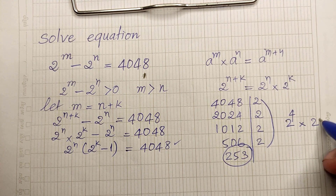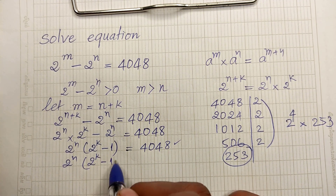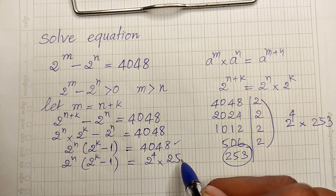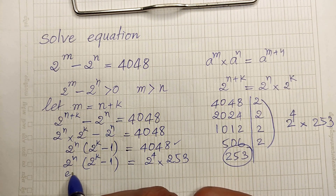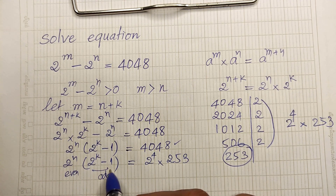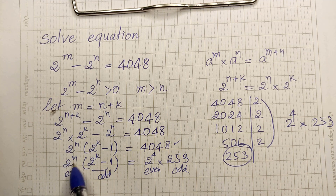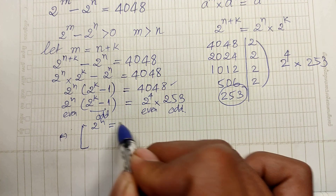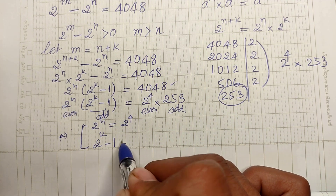We now have 2 power n times (2 power k minus 1) equals 2 power 4 times 253. Matching the two factors: 2 power n equals 2 power 4, and 2 power k minus 1 equals 253.